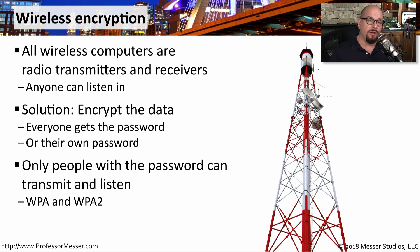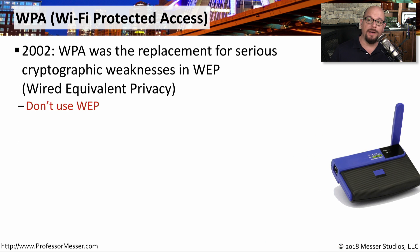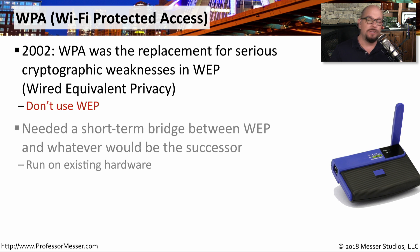One of the most common ways of encrypting data on our wireless networks is using WPA2. And if you have older equipment, you may also see WPA encryption used as well. WPA stands for Wi-Fi Protected Access. It was created in 2002, because we had a serious problem with an encryption method used prior to this called Wired Equivalent Privacy, or WEP. We found a cryptographic vulnerability in WEP that effectively allowed all of our traffic to be decrypted, so we needed something to bridge the gap between the broken WEP encryption and a more permanent successor.